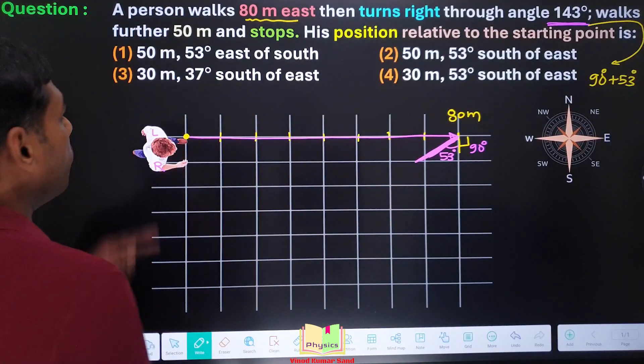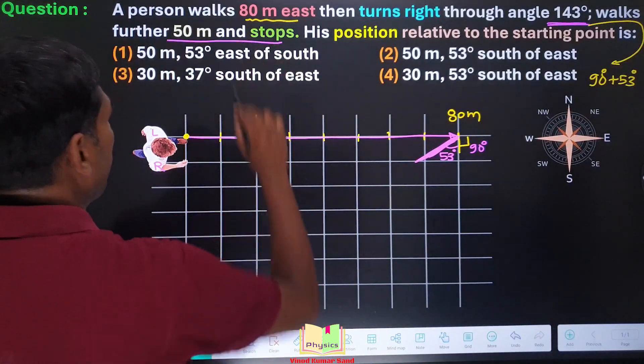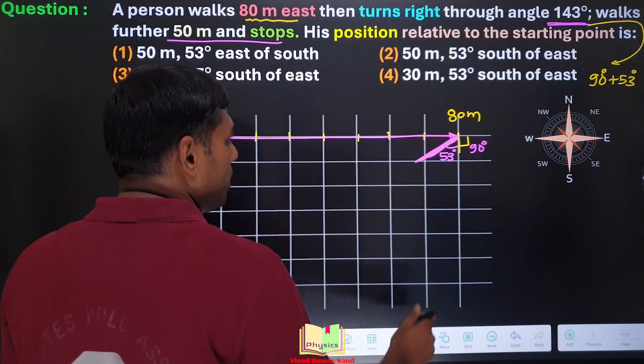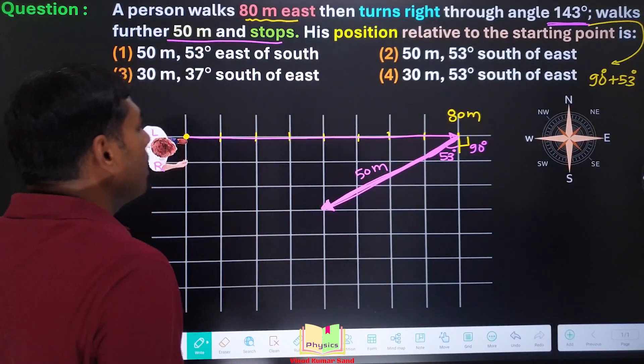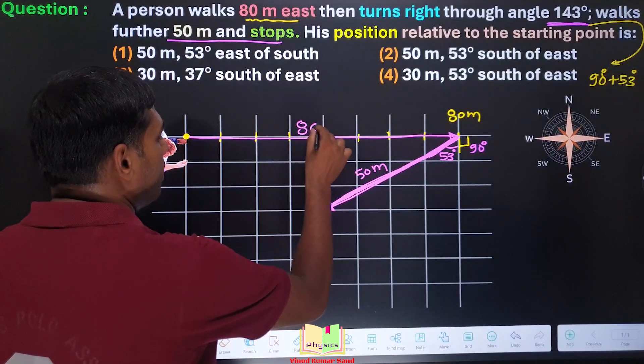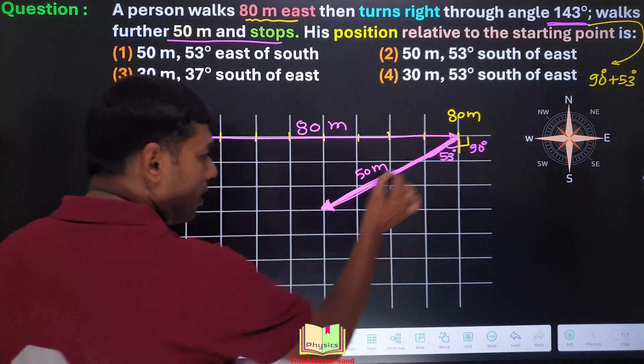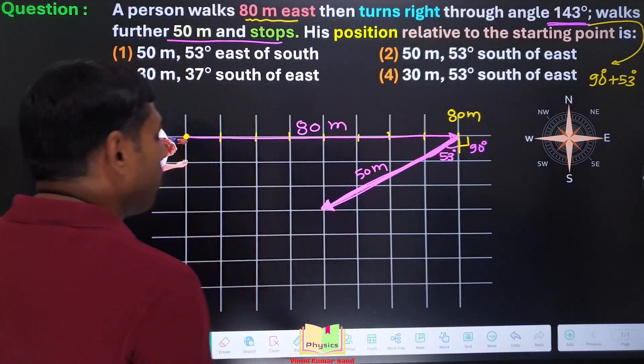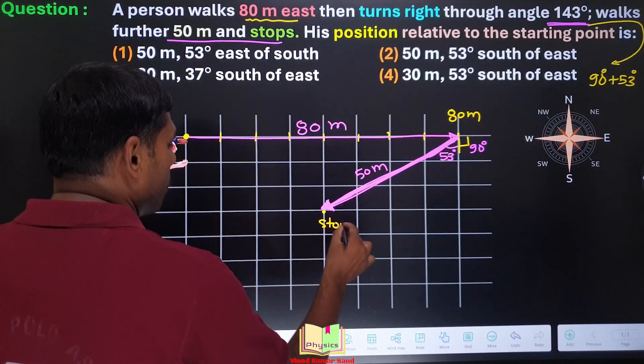Now he travels a distance of 50 meters and then finally stops. So let us draw that distance, 50 meters. Earlier he traveled 80 meters along east, then he traveled 50 meters along this direction. And finally he stops here.